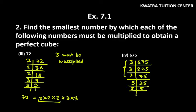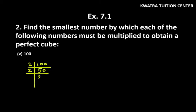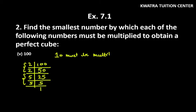Now let's move to the last part, which is 100. Let's find out the factors of 100. 100 is divisible by 2, so you get 50. 50 is divisible by 2 again, so you get 25. 25 is divisible by 5, ending with 5. Now let's see: 2 is not a complete group of three, and 5 is not a complete group of three. So we need to multiply by 2 and 5.